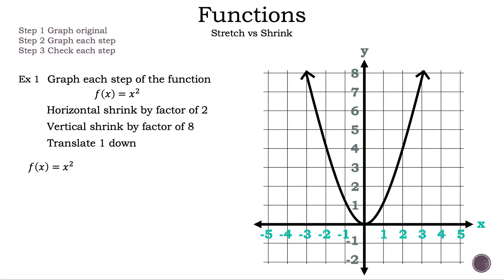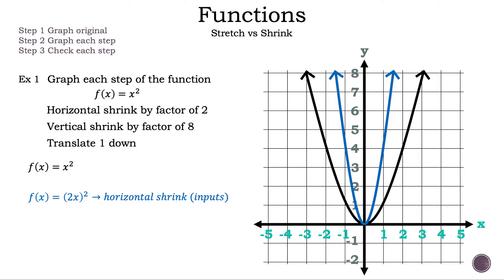Now let's graph f(x) = x². Then let's write down the next step: f(x) = (2x)². What do you think is going to happen? Is the graph going to push in horizontally or push out horizontally? Remember, since the 2 affects the input, the results will happen faster, so the graph is going to push in horizontally or shrink horizontally. Let's check the points (2, 4) and (1, 4). If we divide the inputs of the second step by the first step, or 1 by 2, the result is 1/2 — the reciprocal of the number in the parentheses — because the 2 shrinks the input so it is 1/2 times faster to reach the same output.